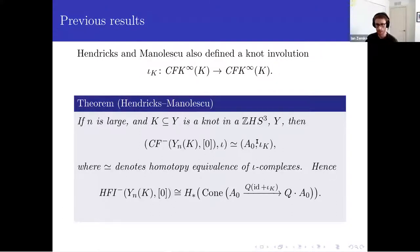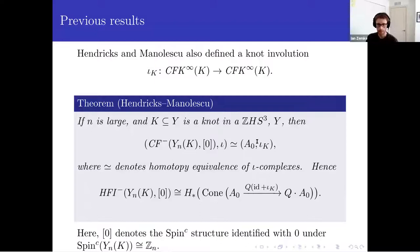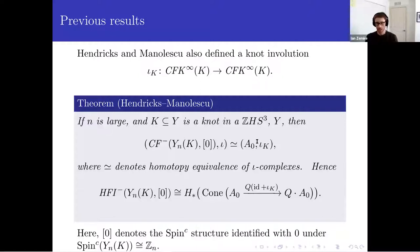You can rewrite this: you can compute the involutive Heegaard Floer homology of the surgery; it's the mapping cone of A_0 with the identity plus iota_K. One challenge to using this for applications is that you need the surgery coefficient to be large. If you want to study the homology cobordism group, you probably want to do plus-one surgery on a knot, and usually plus-one surgery won't be a large surgery. So that's a limitation for studying the homology cobordism group.